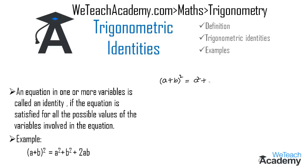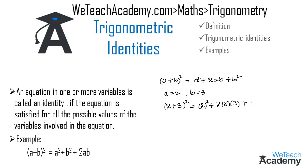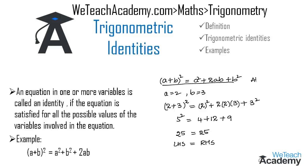Let us verify this with a = 2 and b = 3. Substituting into (a + b)² = a² + 2ab + b², we get (2 + 3)² = 2² + 2(2)(3) + 3², which gives 5² = 4 + 12 + 9, that is 25 = 25. Since LHS equals RHS, the given example is confirmed as an algebraic identity held for all a, b belonging to R.